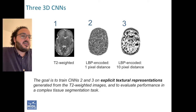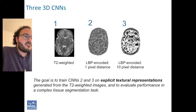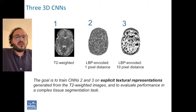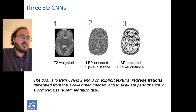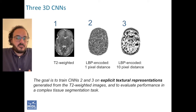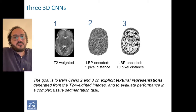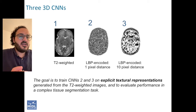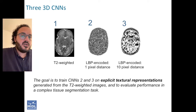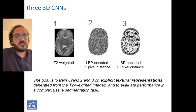These textural maps actually look quite different depending on the parameters we choose to encode them. A textural map that uses a one-pixel distance could look quite different to a textural map that uses a 10-pixel difference. We use two different textural maps and compare those to conventional T2-weighted images as inputs to separate networks.